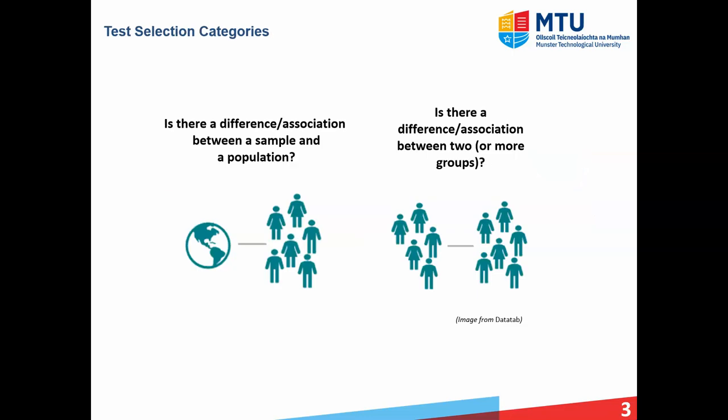Broadly speaking, we're going to look at two different scenarios in terms of test selection. Firstly, as shown on the left-hand side image, we're going to consider a single population with one sample taken from that population and look at whether there's a difference or association between a sample and a population. In the graph on the right-hand side, we have the second scenario where we have two or more samples from a population, and we'll look at a difference or association between those groups.